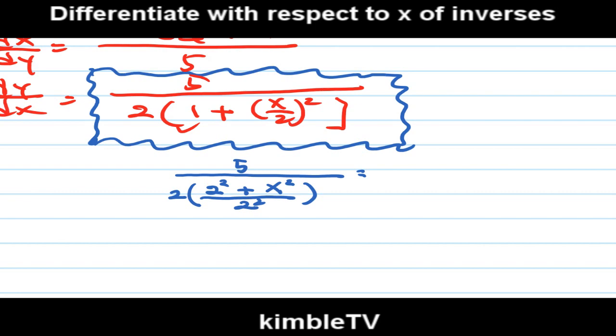I can call 4 in order to simplify this one more. 5/[2(4 + x²)/4]. This will cancel. And 5/(2/4)(4 + x²) = 10/(4 + x²). Finish. This is the derivative of tangent shift.